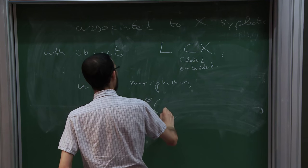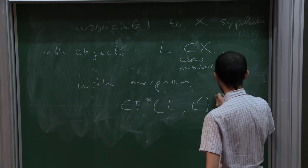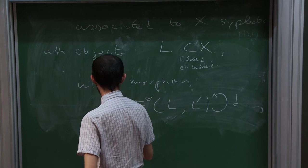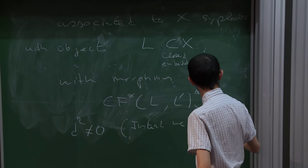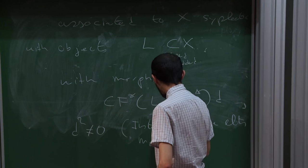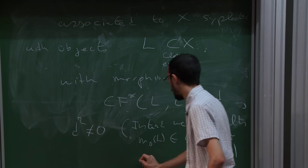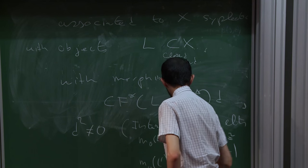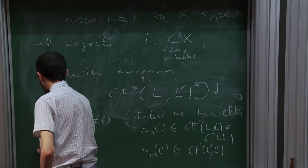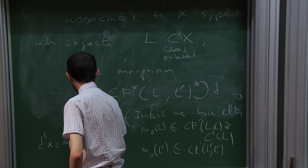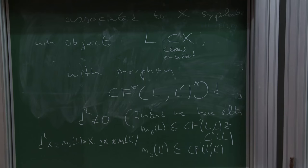In general, this category has morphisms given by Floer complexes. In general, this category shouldn't really deserve the name of a category because these morphisms — these complexes — are going to have some kind of differential, but d² is not equal to zero. Instead, we have elements which we can call M₀(L), that lives inside the Floer cochain complex CF*(L, L), and M₀(L'), which also lives in CF*(L', L').